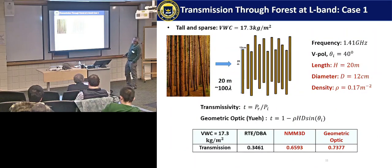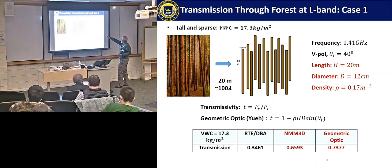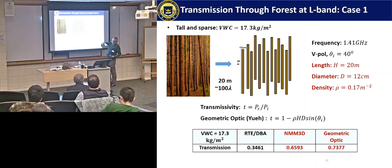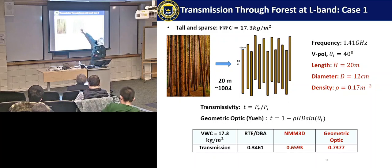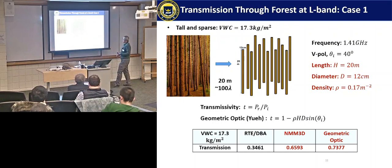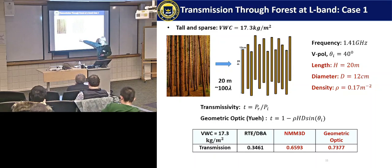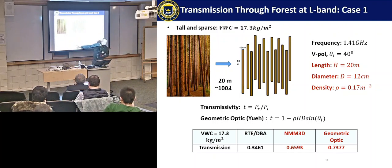Here is actual data looking at a geometry in Harvard Forest, where there are about 15 trees per 100 meters squared — 17 trees in this case. The height is 20 meters and the diameter is 12 centimeters. We shine an incident wave, use the Foldy-Lax equation, and calculate the transmission at the bottom — how much energy reaches the soil. Transmissivity is P_R over P_I. Simon Yu proposed a simple formula: T equals 1 minus density times height times diameter times sine beta_i. Using the classical approach, you get 35% transmission. Using Maxwell's equation, you get 66%, much higher. Using the geometric optics approach, it's 73%.